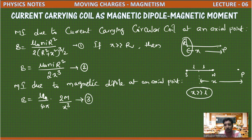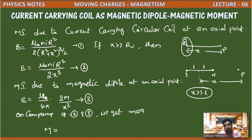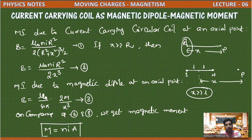Comparing equation 2 and equation 3, we get magnetic moment m = niA. This is the formula for the magnetic moment of a circular coil.